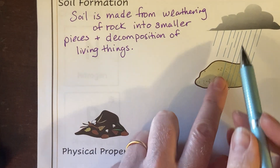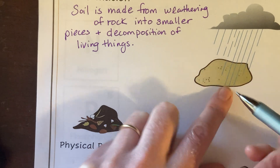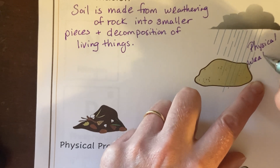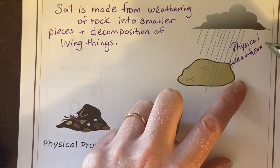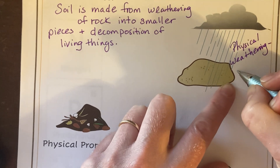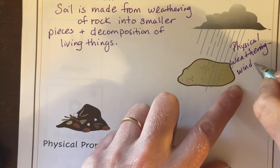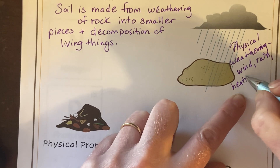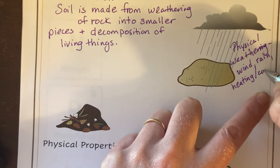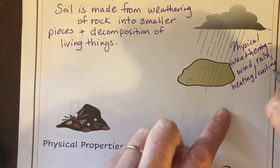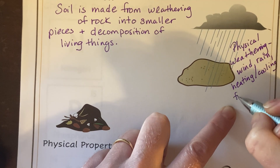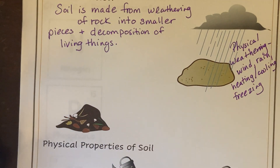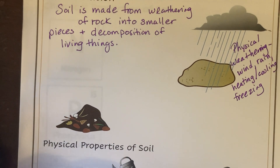The first type of weathering is physical weathering. That includes things like wind, rain, heating and cooling — we call that thermal expansion and thermal contraction. Over time it can crack the rocks. For example, freezing: if you've got a wet rock and it freezes, that water expands and it can crack the rock into smaller pieces. That's physical weathering.